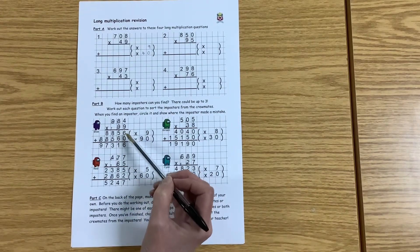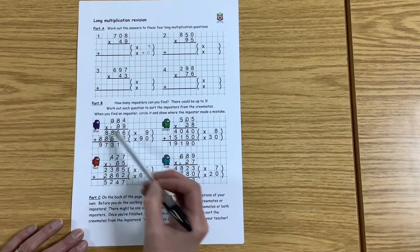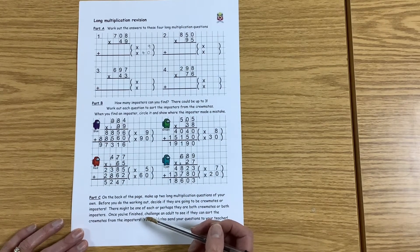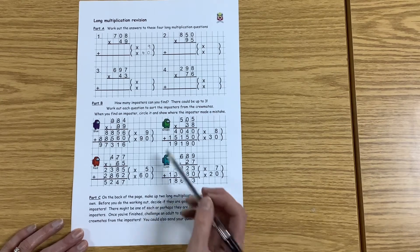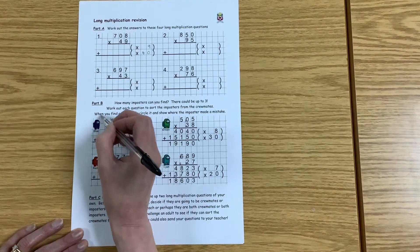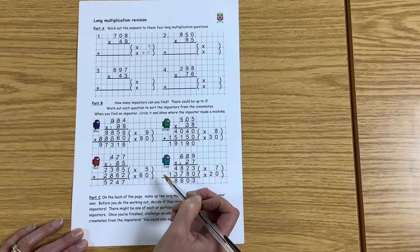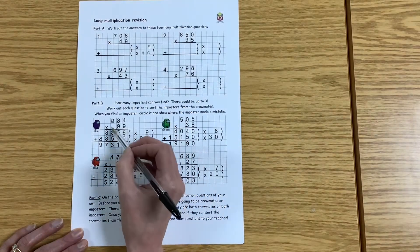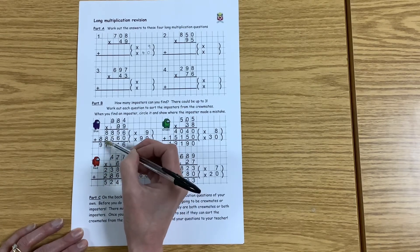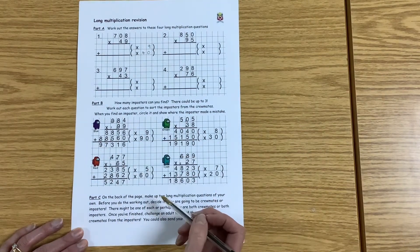But can you work out if each of these characters is a crewmate or an imposter? You'll need to go through the question, work out each answer, work each line out, do the adding up. If it works, it's a crewmate. If there's a mistake somewhere, then it's an imposter. If you do find an imposter, circle the imposter and show us where the mistake happened. Perhaps was the carried number wrong? Was there a problem in the adding? Where is the mistake? Put a circle around where the mistake was as well.